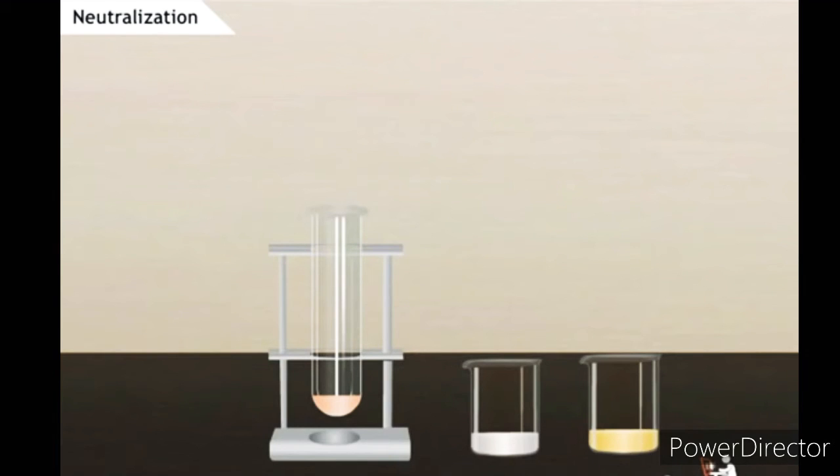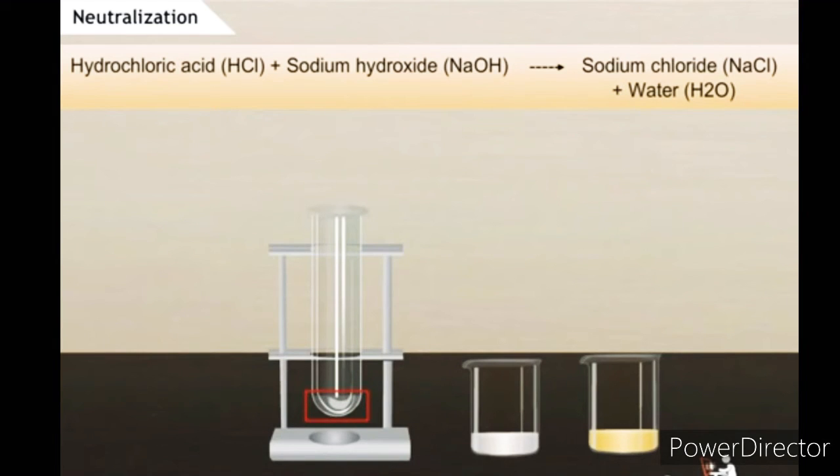Now add hydrochloric acid drop by drop into the test tube. At a certain point, we can observe the reddish orange solution changing to colorless. This indicates that the basic nature of sodium hydroxide is neutralized by the addition of hydrochloric acid.